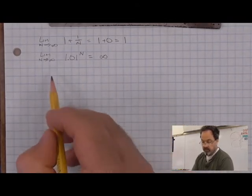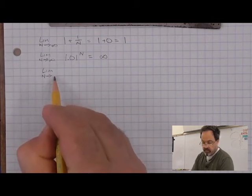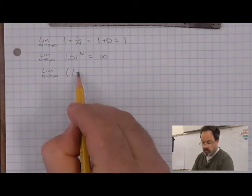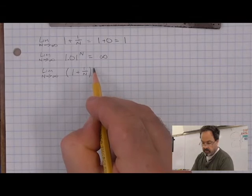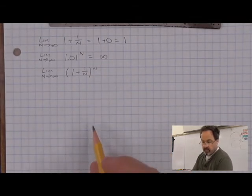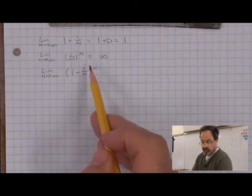Let's bring them together and think about the limit as n goes to infinity of the expression 1 plus 1 over n, all to the nth. You can see that this new expression is a combination of the two situations before.